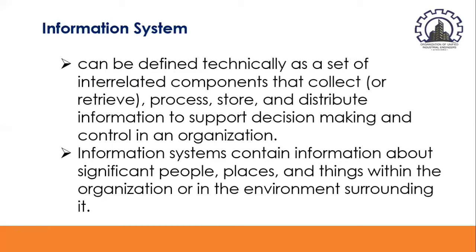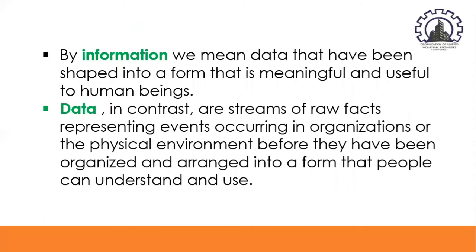Information systems contain information about significant people, places, and things within the organization or in the environment surrounding it. By information, we mean data that have been shaped into a form that is meaningful and useful to human beings. Data, in contrast, are streams of raw facts representing events occurring in organizations or in the physical environment before they have been organized and arranged into a form that people can understand and use.